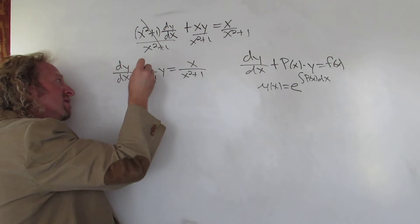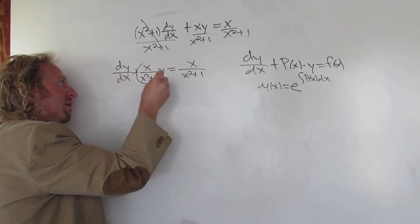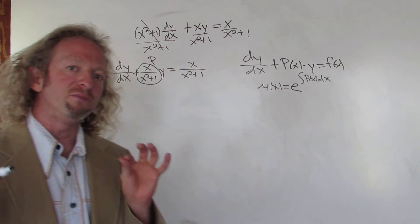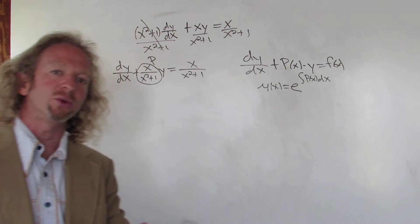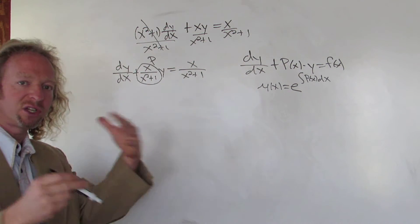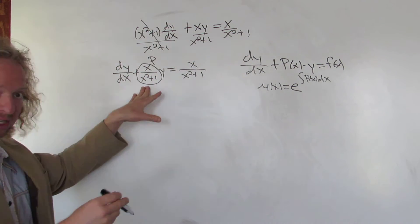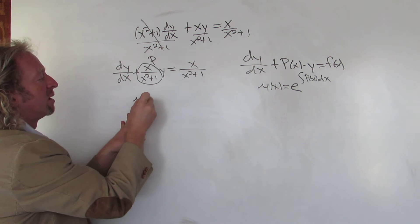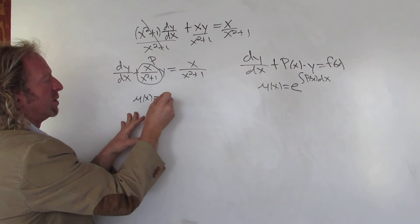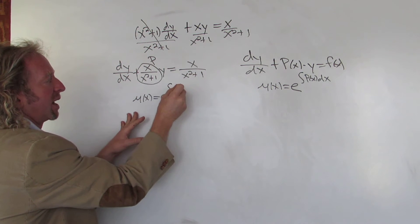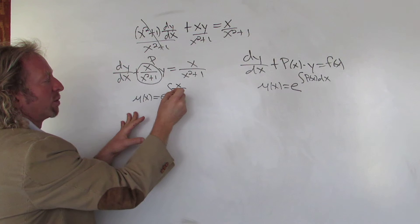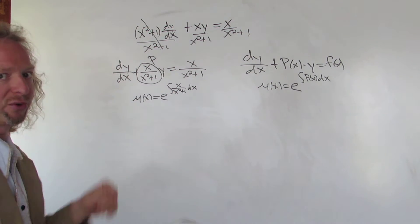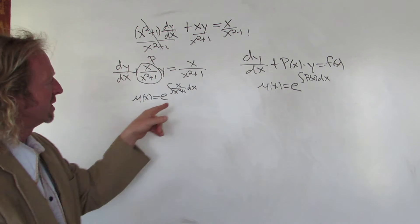Now you can see what the big P is — it's x/(x²+1). So you compute μ(x), which equals e to the integral of P(x) dx, that is, e to the integral of x/(x²+1) dx.